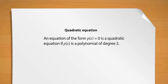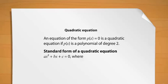To obtain the standard form of the equation, we write the terms of p(x) in descending order of their degrees. So, the standard form of a quadratic equation is ax² + bx + c = 0, where a, b and c are real numbers and a is not equal to 0.